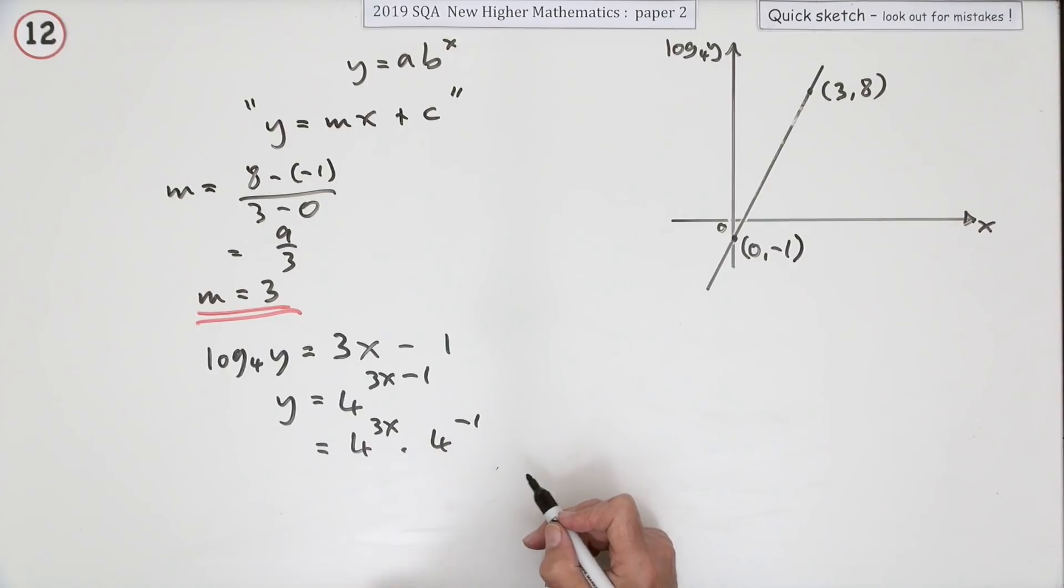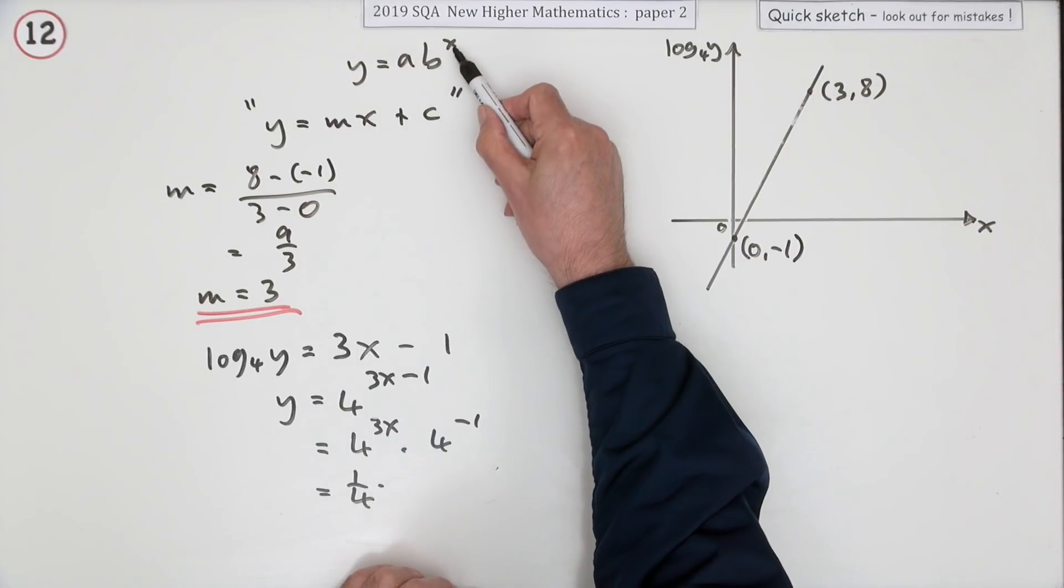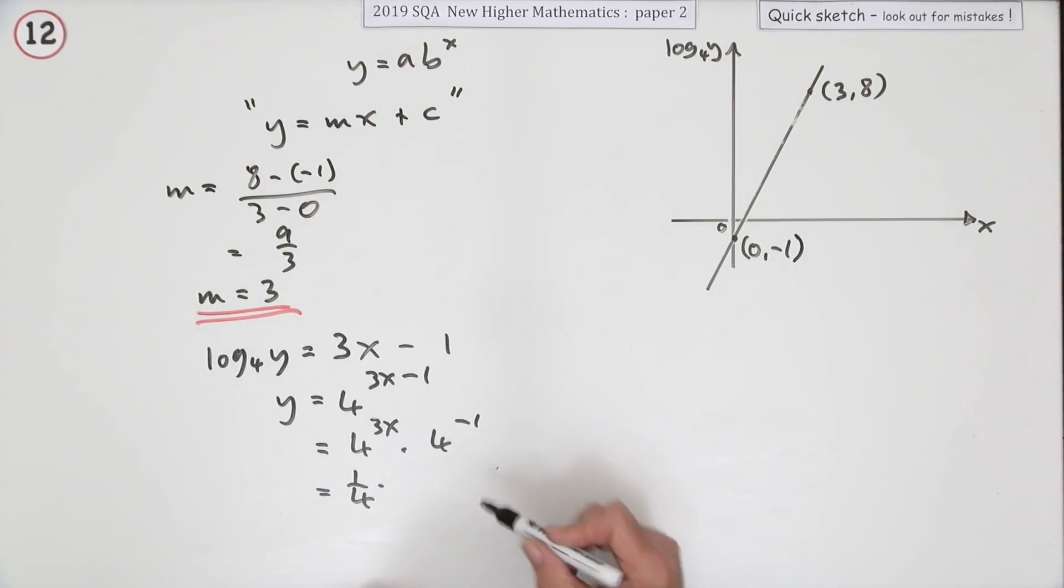I'll put that at the front. And this 4^(3x), well you don't want it to look like that. You just want it to be something to the x on its own. You don't want the 3 with it. That's another rule of indices. I'll just split it there. It's 4³ to the power x, and 4³, the cube of 4, is 64.